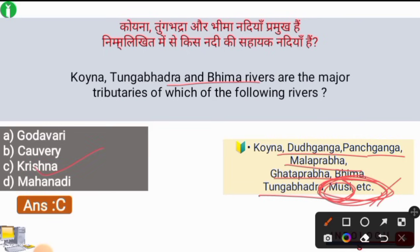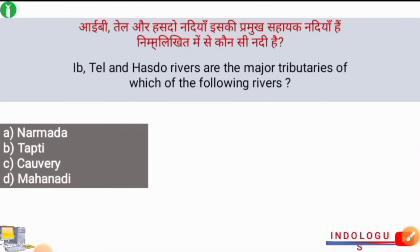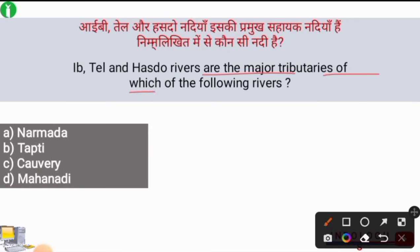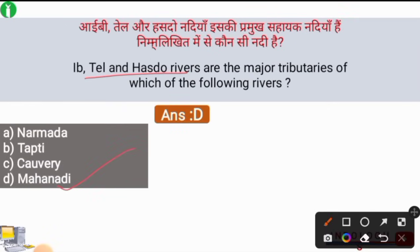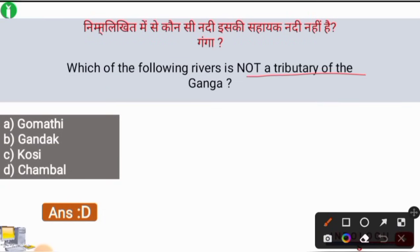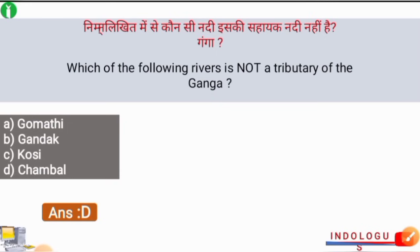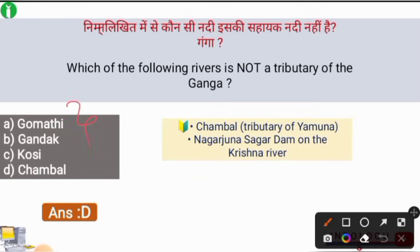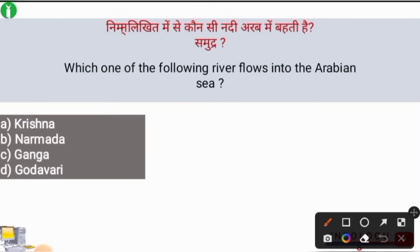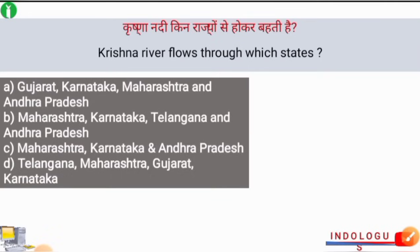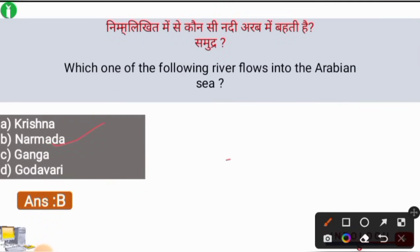The Krishna River's tributaries include Koyna, Dhusganga, Panchganga, Malprabha, Gatprabha, Bhima, Tungabhadra, and Musi. Next question: Which of the following is not a tributary of the Ganga River? The right answer is option D, the Chambal River. Chambal is a tributary of the Yamuna River, not the Ganga. The Nagarjuna Sagar Dam is on the Krishna River. Next question: Which river flows into the Arabian Sea? The right answer is option B, the Narmada River. Narmada, Tapi, and Damodar are the rivers draining into the Arabian Sea.